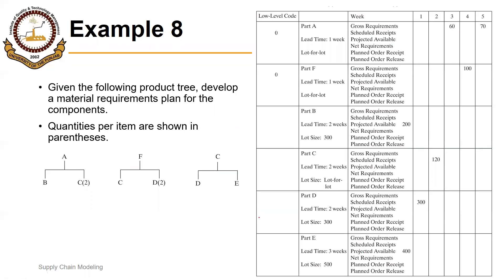In this example, we have multiple bins of material. We have end items A and F, and C is actually the component of both A and F — this is its product tree. We have a gross requirement of 60 for A in week 3 and 70 in week 5.